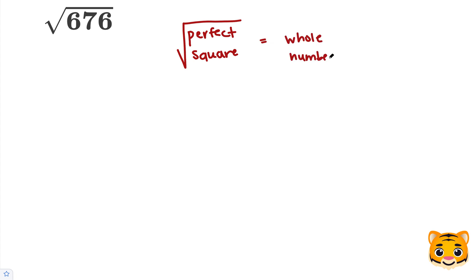To find the whole number that is the square root of 676, let's use a math rule. The square root of a times b is equal to the square root of a times the square root of b.